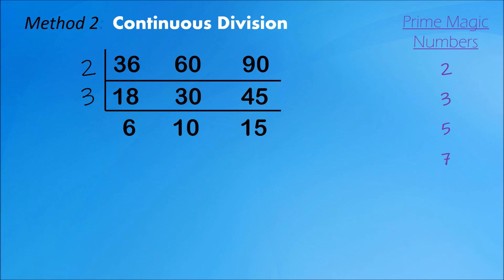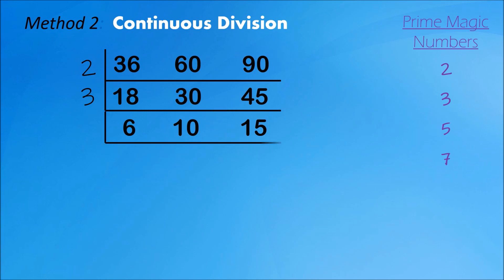Are these 3 divisible by the same number? No — only 6 and 10 are divisible by 2, only 6 and 15 are divisible by 3, only 10 and 15 are divisible by 5, and they're all not divisible by 7. So does our ladder stop there? No — we continue as long as there are at least two numbers we can divide by the same divisor. You have three options: choose 6 and 10, 6 and 15, or 10 and 15. Let's choose 6 and 10 and divide by 2.